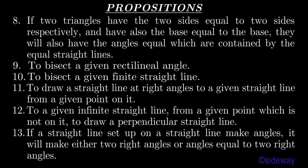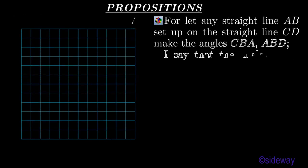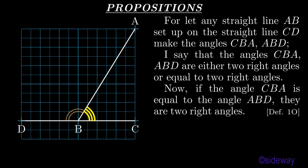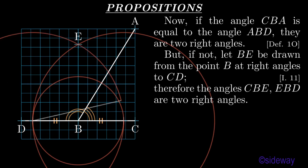Proposition 13. If a straight line set up on a straight line makes angles, it will make either two right angles or angles equal to two right angles. Let any straight line AB set up on the straight line CD make the angle CBA, ABD. I say that the angles CBA, ABD are either two right angles or equal to two right angles. Now if the angle CBA is equal to the angle ABD, they are two right angles, by Book 1 Definition 10. But if not, let BE be drawn from the point B at right angles to CD, by Book 1 Proposition 11. Therefore the angles CBE, EBD are two right angles.